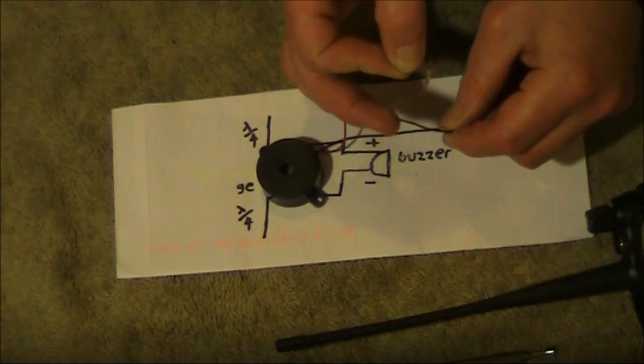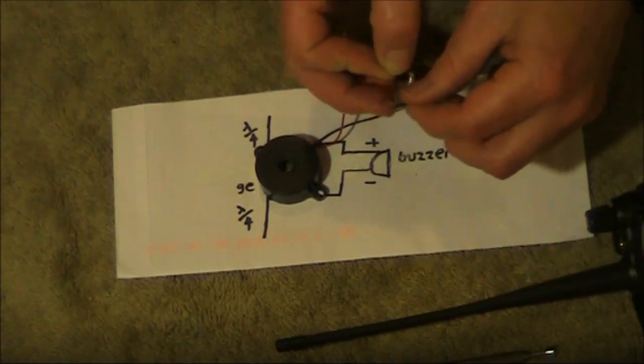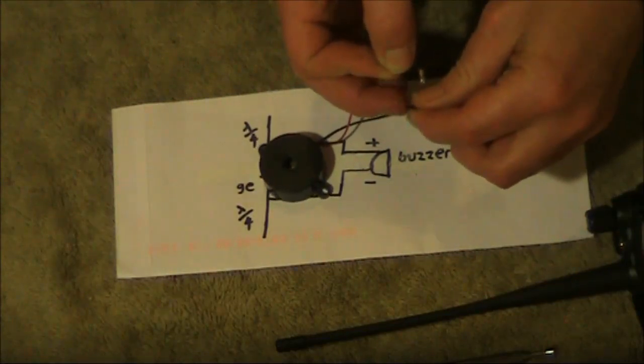And the negative, or black lead of the buzzer, goes to the other end of the diode.